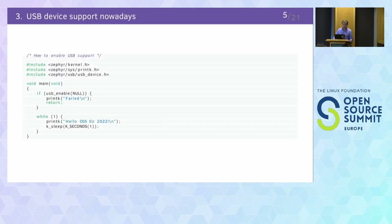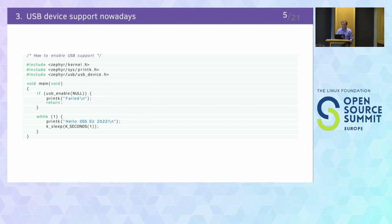That is very simple — you just have to call USB enable and then it works out of the box, probably. You can pass a callback parameter, and that will notify you about state changes in the USB stack, like if the device gets configured you will be notified about that. There are some drawbacks depending on the driver — it will be executed in ISR context, so you need to be careful about that. But that's only one part of how to enable USB in Zephyr.